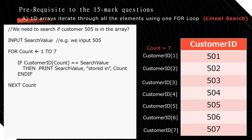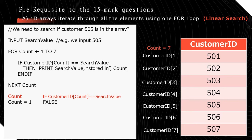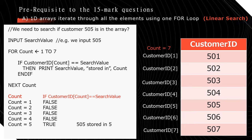The for loop iterates 7 times, and inside there's an if statement checking whether each element equals the search value. Tracing: count equals 1 returns false; count equals 2 returns false; count equals 3 returns false; count equals 4 returns false; count equals 5 returns true — so we print '505 stored in index 5'; count equals 6 returns false; count equals 7 returns false. That completes this simple linear search.